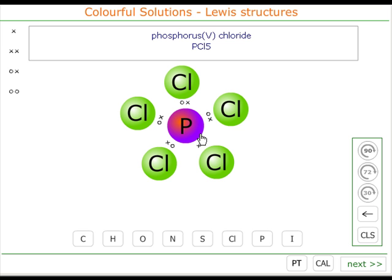So phosphorus pentachloride is trigonal bipyramidal.